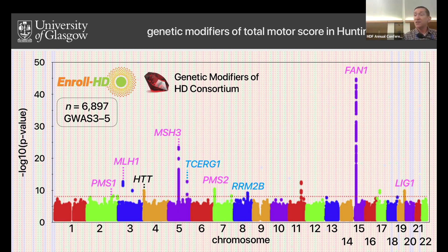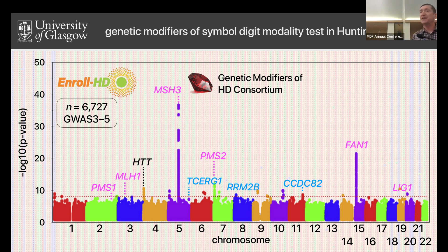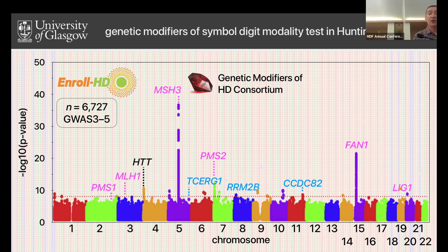Most of those genes are the same, most have gone up, some have gone down. Different phenotypes have different power to reveal particular genetic modifiers. One new gene, CCDC82, was just below significance with age of onset but goes well above the line with this particular phenotype. With the symbol-digit modality test — more a test of cognition — the FAN1 signal goes down but the MSH3 signal becomes much more significant. That likely illustrates that different genes have different effects in different cell types, or that the underlying genetic variants have different actions in different cell types, giving different effect sizes.